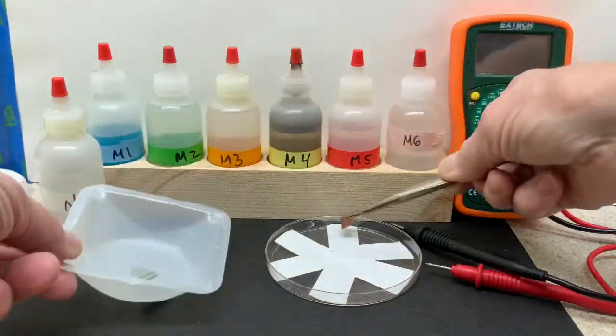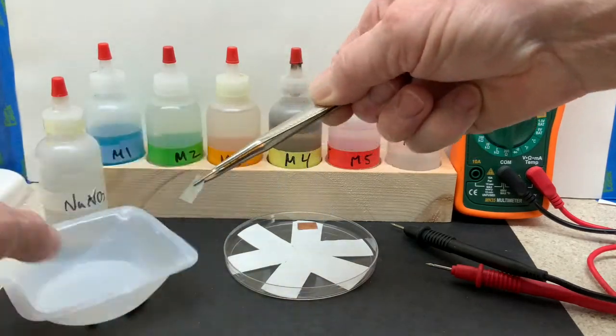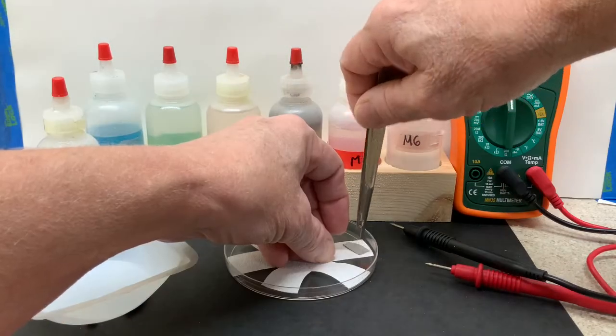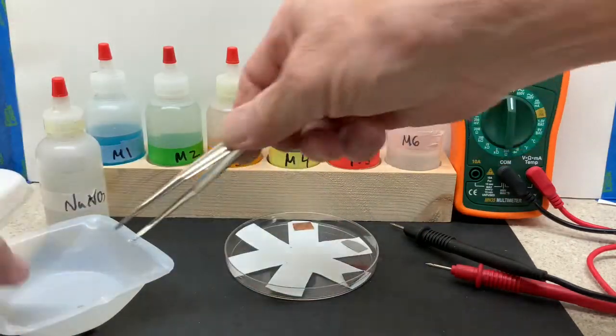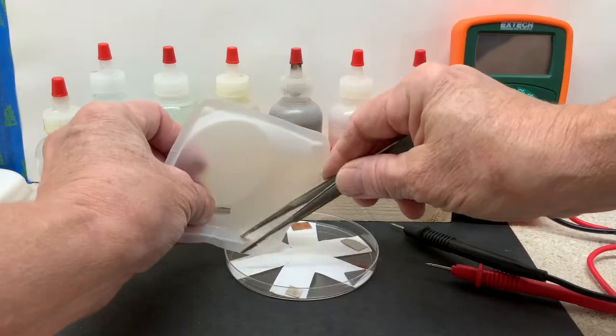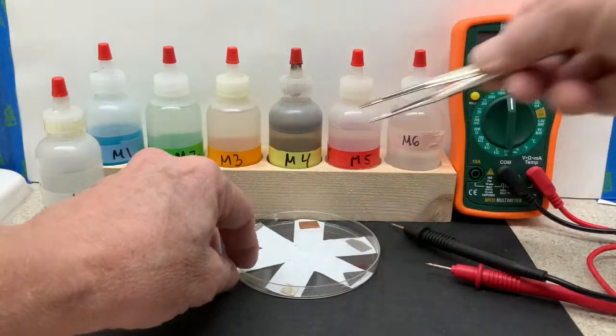Into the top of the petri dish, place the metals one at a time: metal one, metal two, metal three, all the way around on the outside of each spoke. Metal four, metal five, and then metal six.